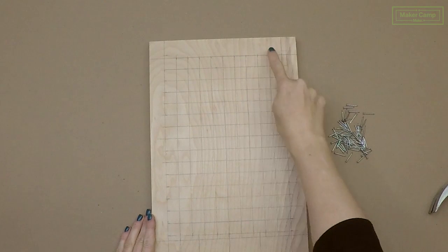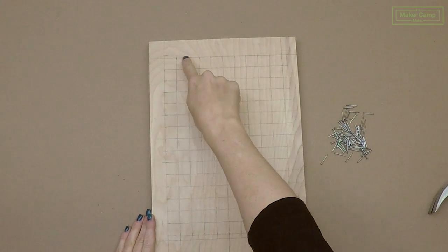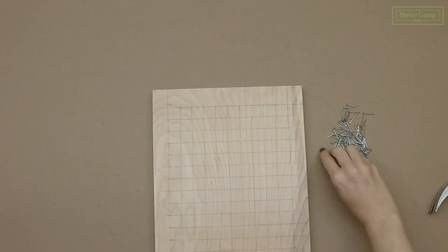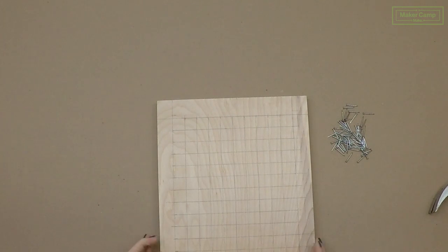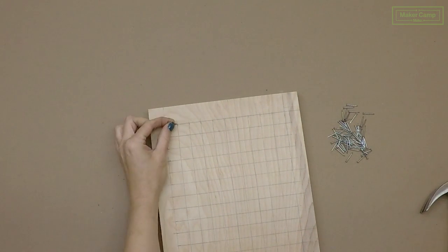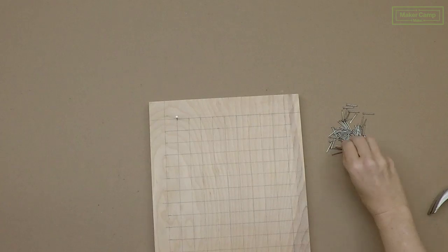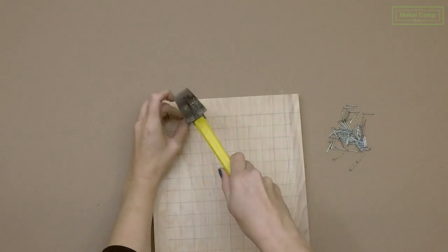Our first row of nails will go right along the intersections of that first grid line. Try to hammer your nails in as straight as possible and right on that edge. Because our marbles are half an inch wide this three quarters of an inch space doesn't leave a whole lot of wiggle room.